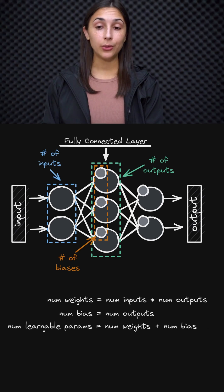Therefore, the total number of learnable parameters within a layer is equal to the number of weights plus the number of biases within that layer.